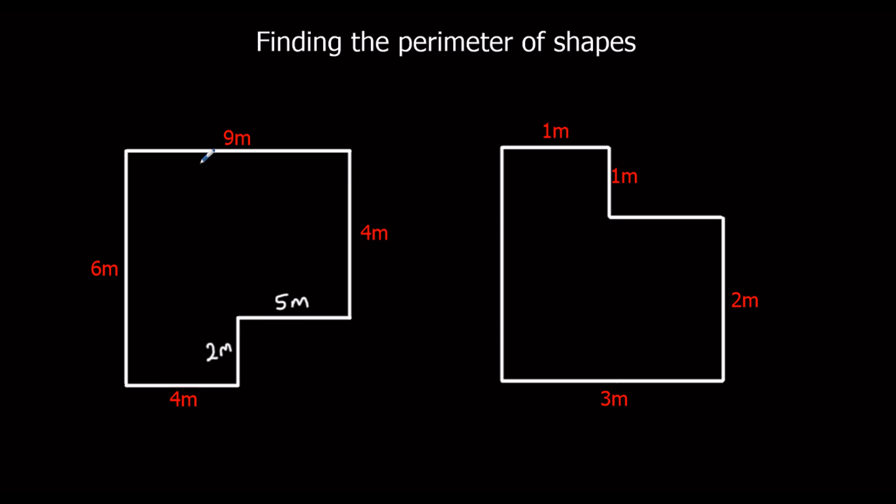So now all we've got to do is add up the lengths to find the perimeter, because remember the perimeter is the total length around the edge of the shape. So we've got 6 plus 9 plus 4 plus 5 plus 2 plus 4. Now I did that by going around the shape, as if I was walking along the edge of the shape. So I went up here, along here, down here, across here, down here, and back along to where I started. And that way you can make sure you don't miss out any other lengths.